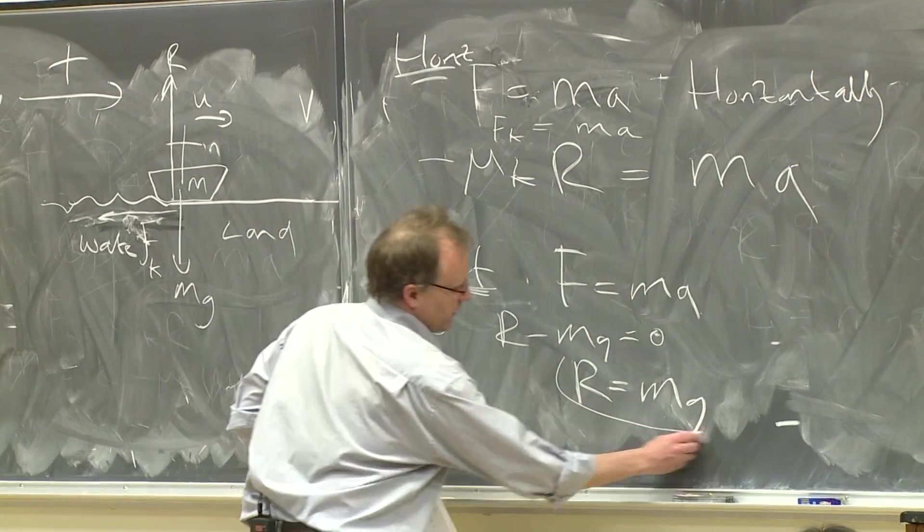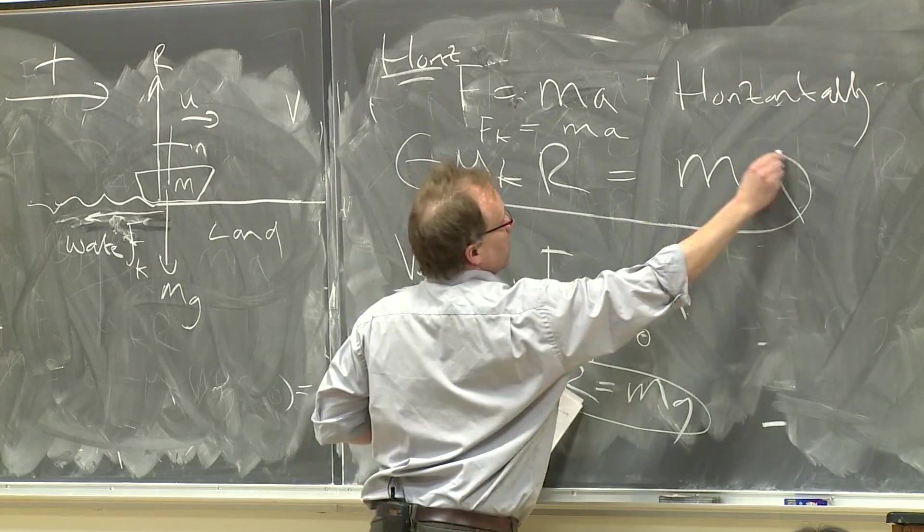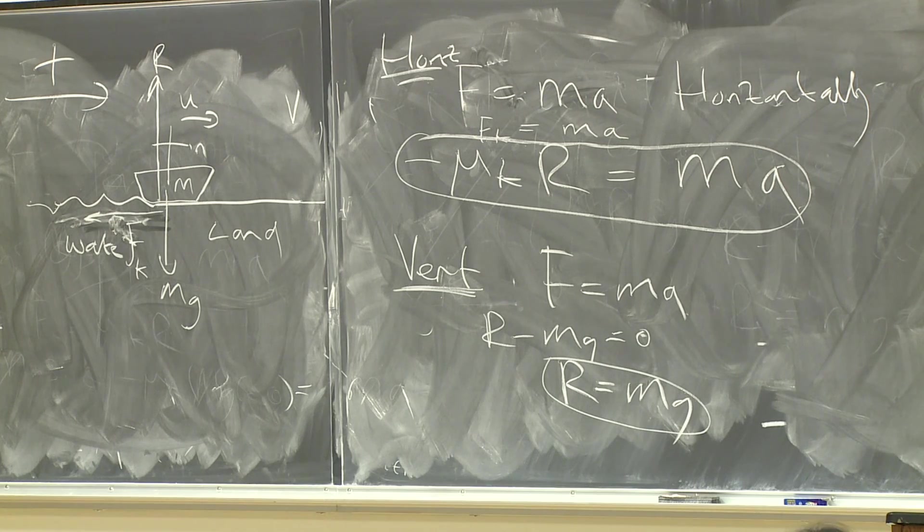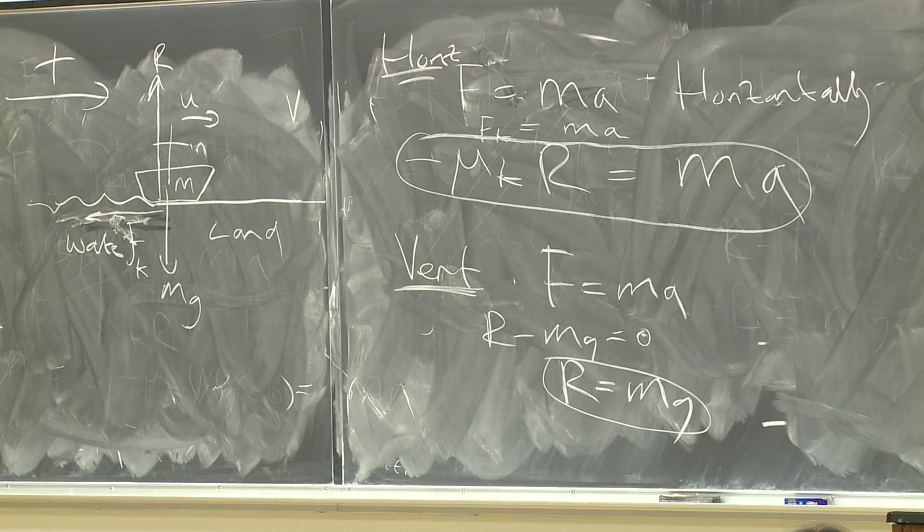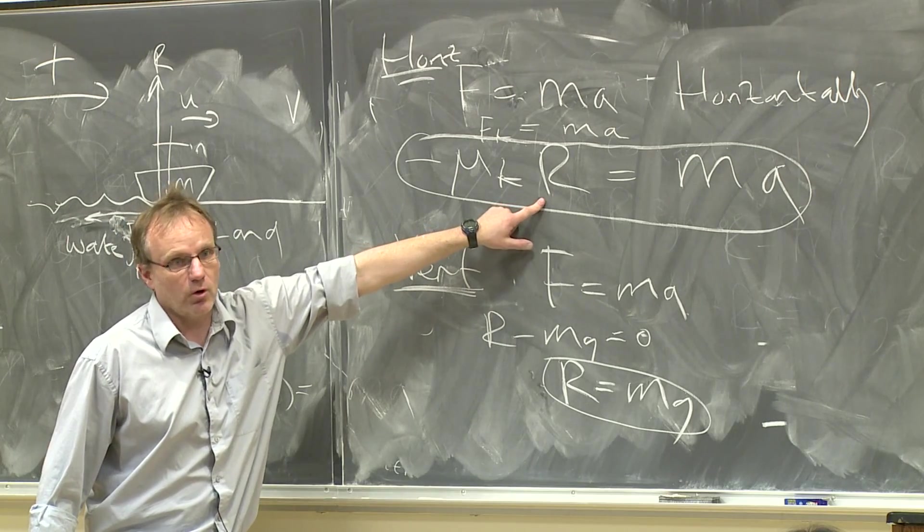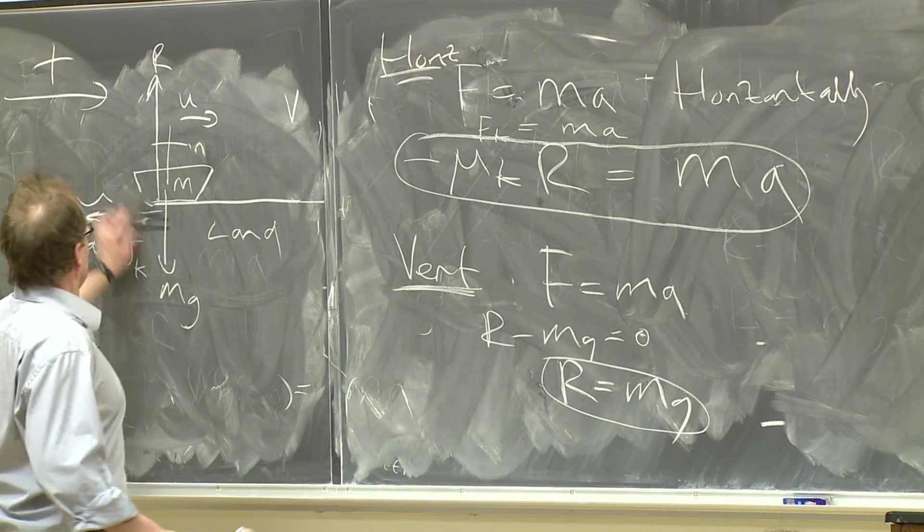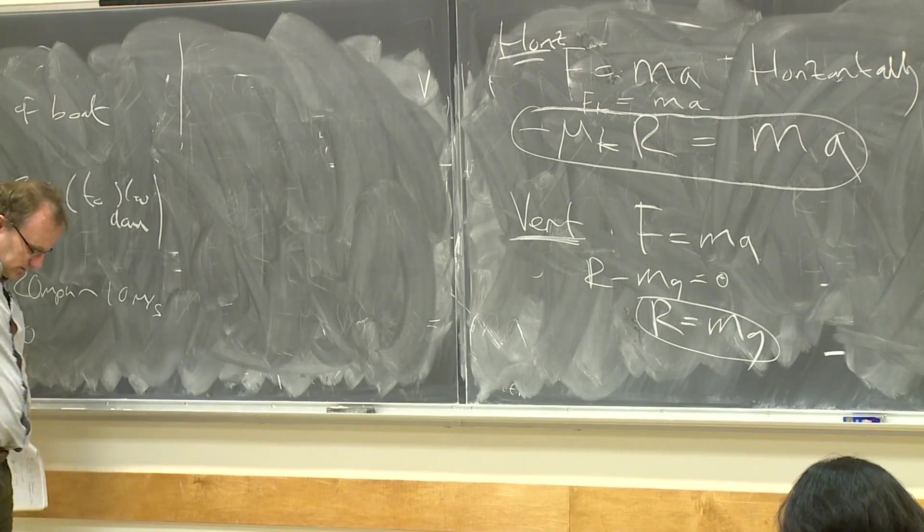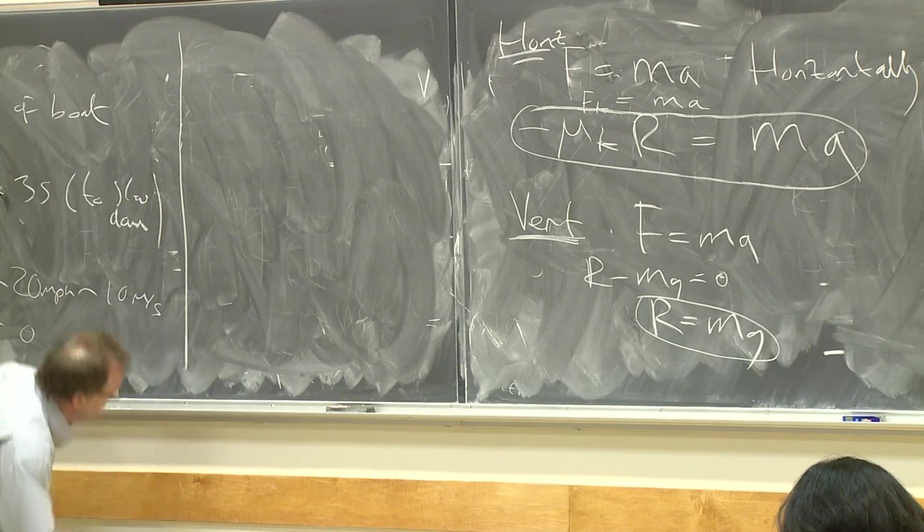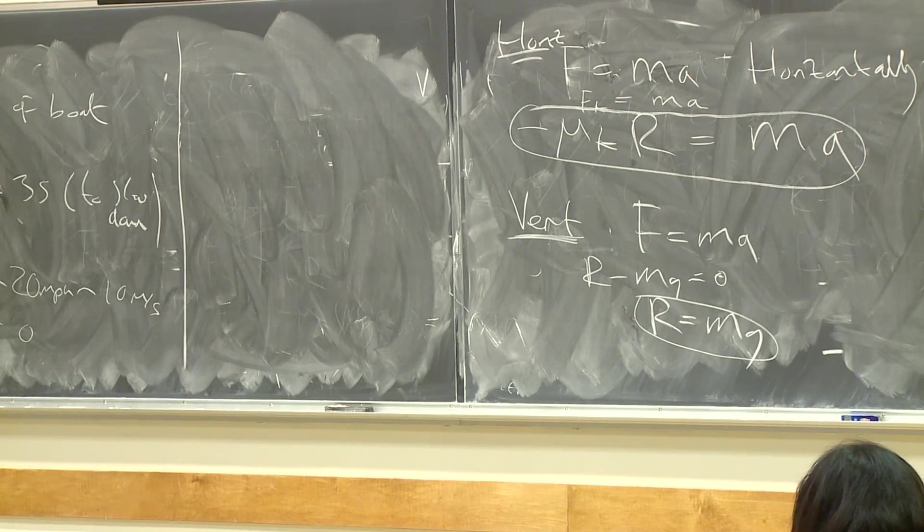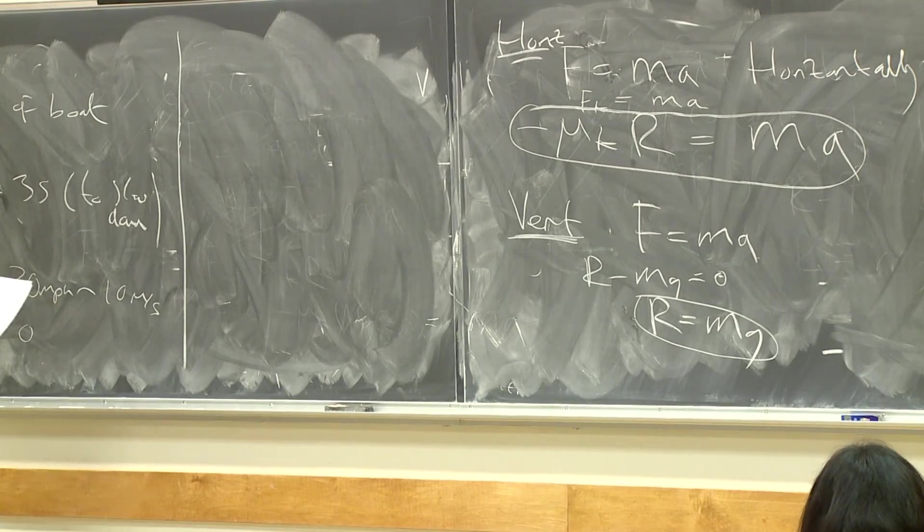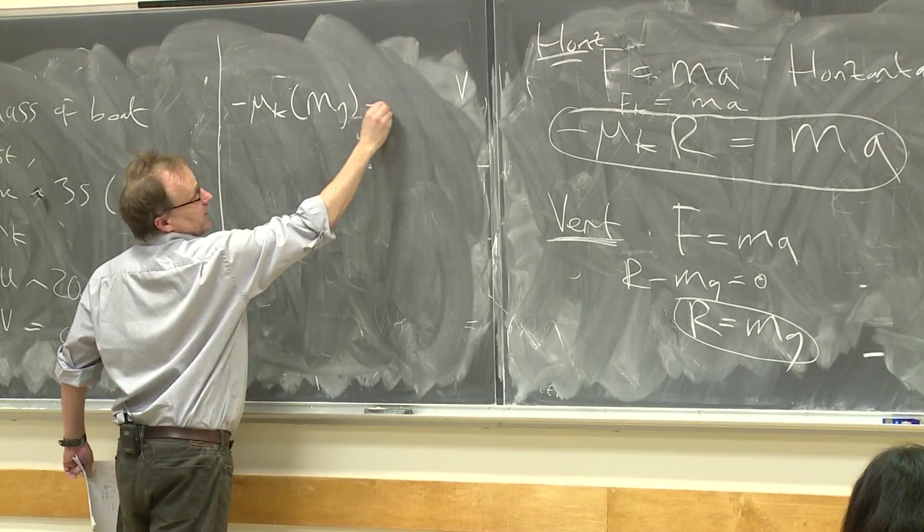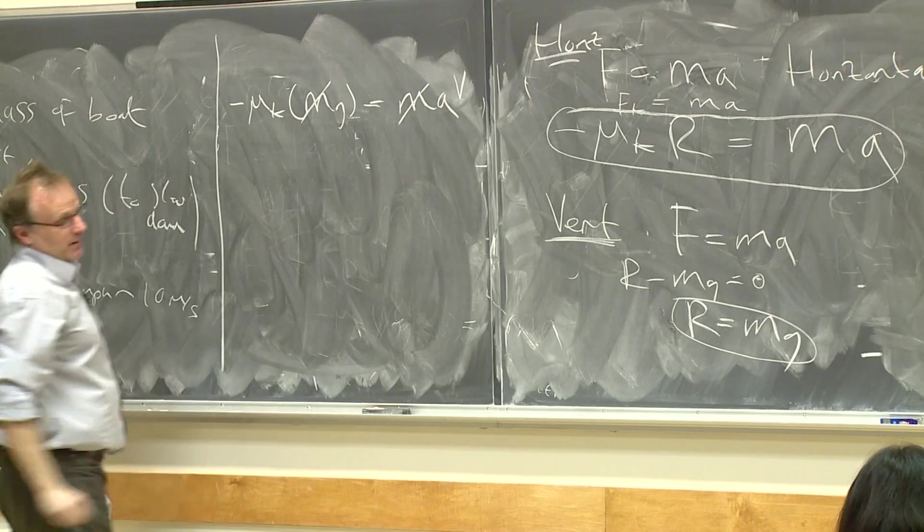So we have one equation here and one equation here. You can substitute this equation into here because we know what R is. So if we substitute that into here, we have minus μk times by mg equals ma, so in actual fact the mass cancels in this case.